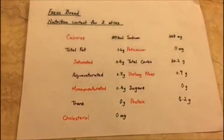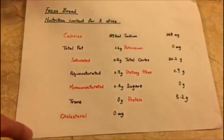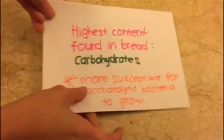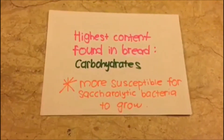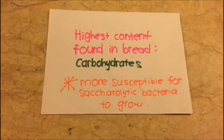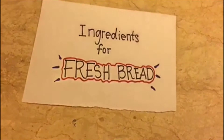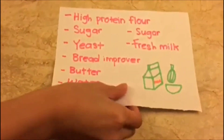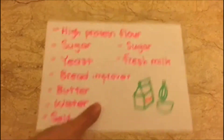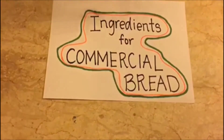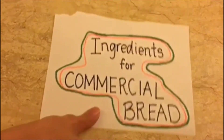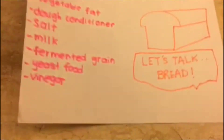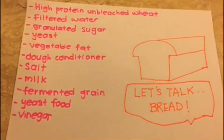These are the nutrition content found in fresh bread. Carbohydrates are the main content found in bread, which allows more sugar-related bacteria to grow. These are the ingredients found in fresh bread, and these are the ingredients found in commercial bread.